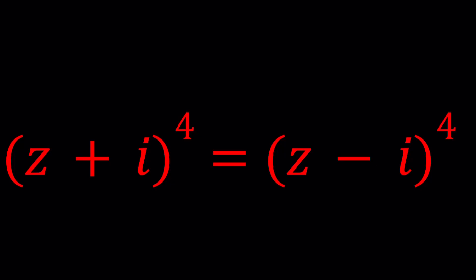Z plus I to the fourth power is the same as Z minus I to the fourth power. How is that possible? Okay, let's see how that works.